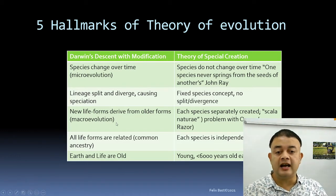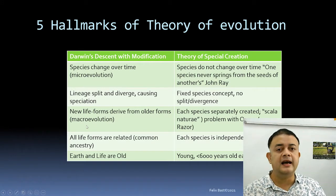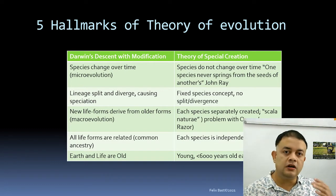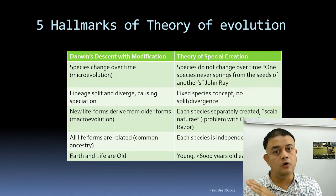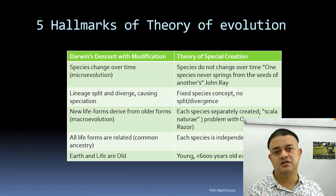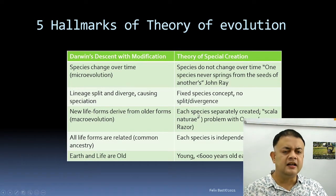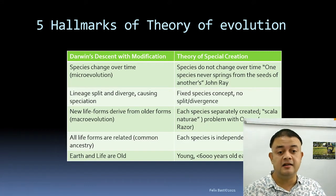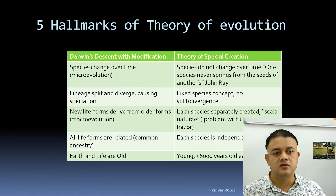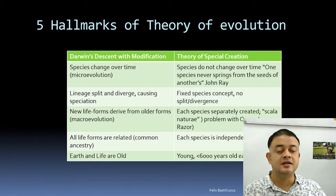In special creation, species are fixed and static — no divergence happens. New life forms deriving from older forms is macro-evolution, which relies heavily on paleontology. The fossil record shows gradual morphological changes over time. In special creation, each species is separately created — the concept of scala naturae of Aristotle. The problem with this is Occam's razor — the philosophical principle by William of Occam that you should choose the simplest solution with the fewest assumptions.